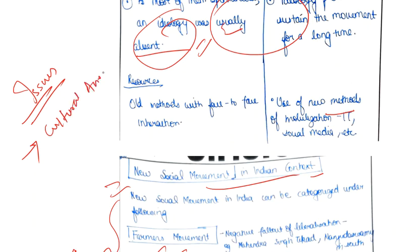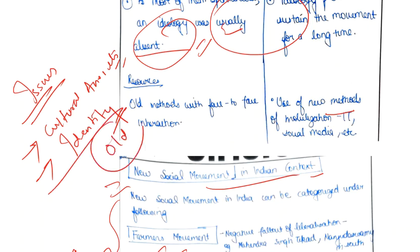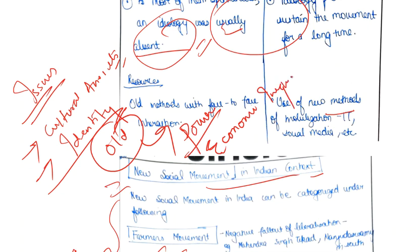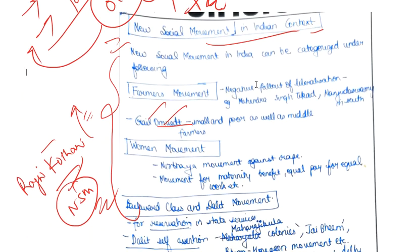Another important element of new social movements is that they are specifically about cultural anxieties and identity-related issues. The old conventional movements were mostly about redistribution of power and economic inequality, but new social movements are different in terms of the issues they are concerned with — they go beyond economic grievances to focus on identity and culture.